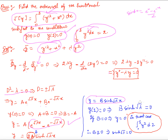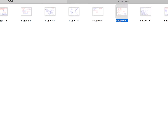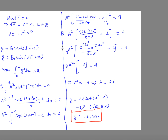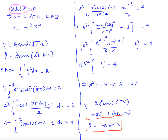Applying y(1) = 0 gives b·sinh(sqrt(λ)) = 0. Either b = 0 or sinh(sqrt(λ)) = 0. If b = 0, then y = 0 and the constraint (integral of y² from 0 to 1 equals 2) is not satisfied, so b = 0 is not possible. Therefore sinh(sqrt(λ)) = 0, which gives sqrt(λ) = i·π·k for integer k, so λ = −π²k².